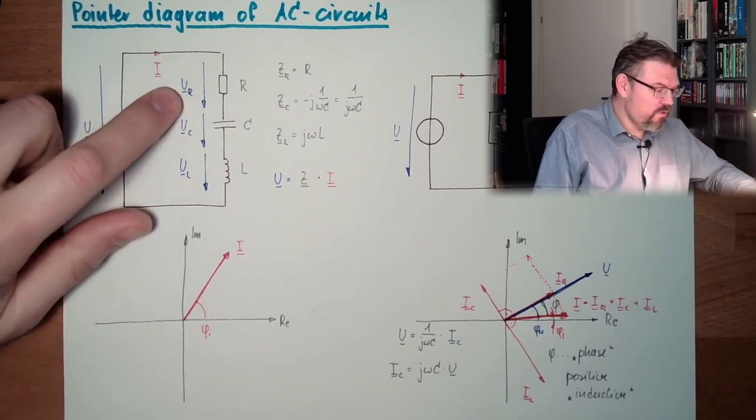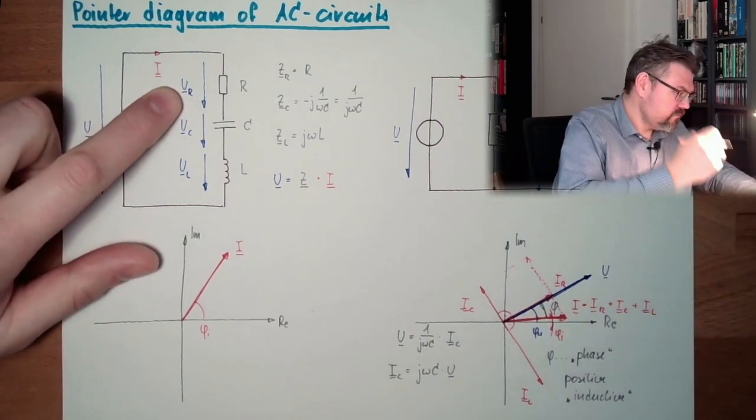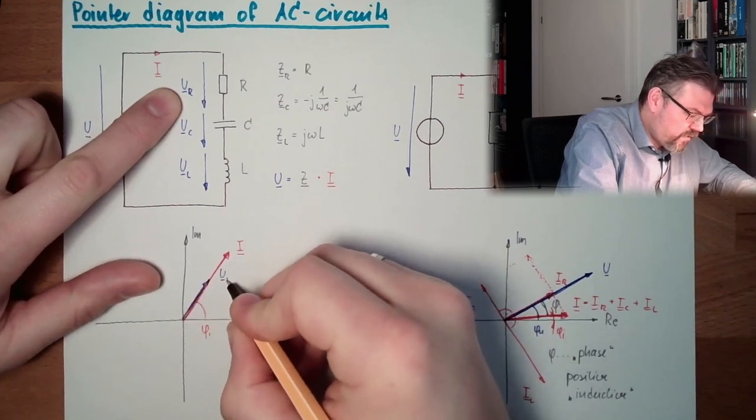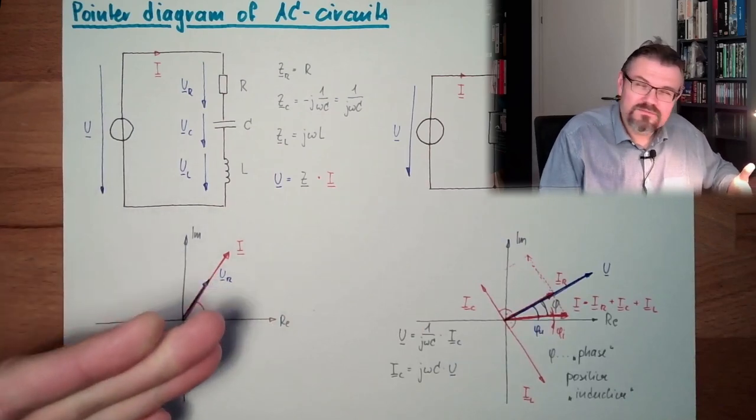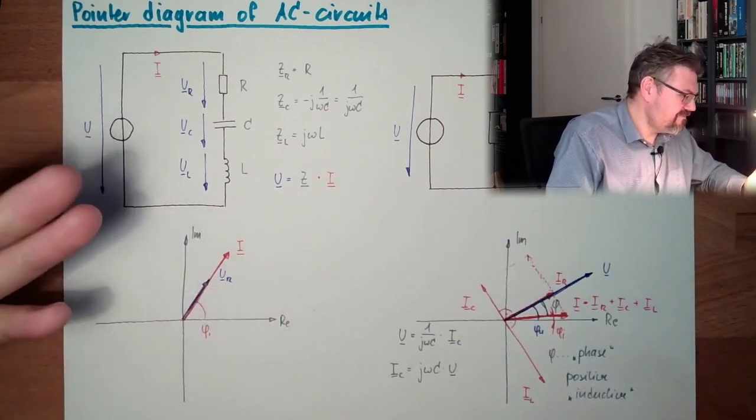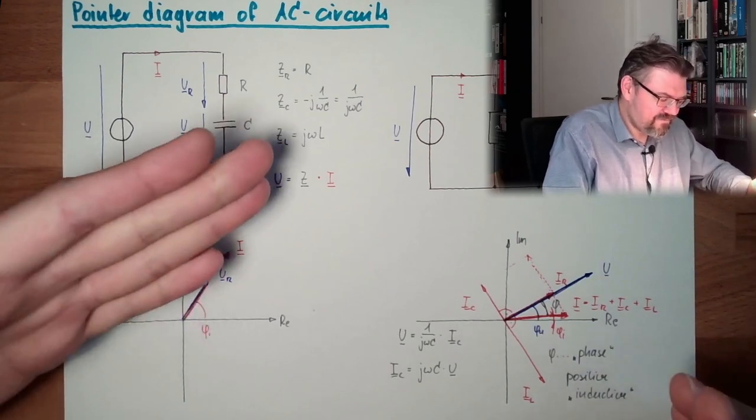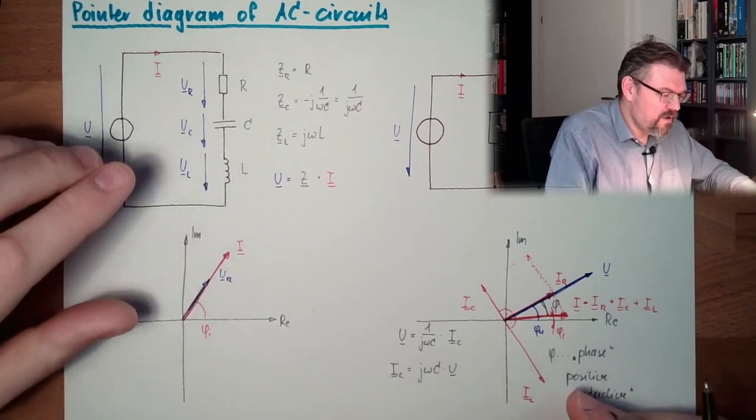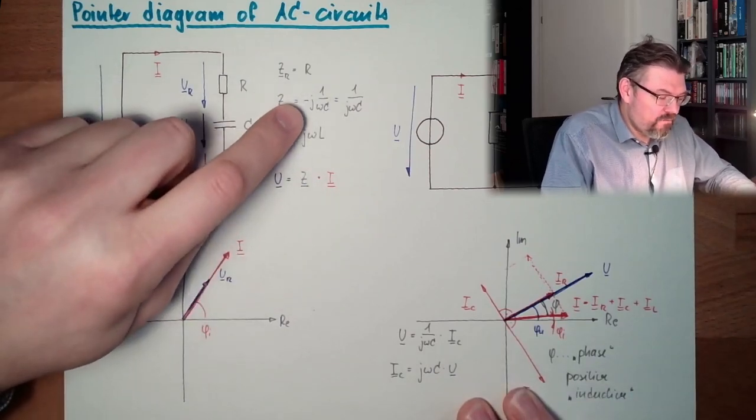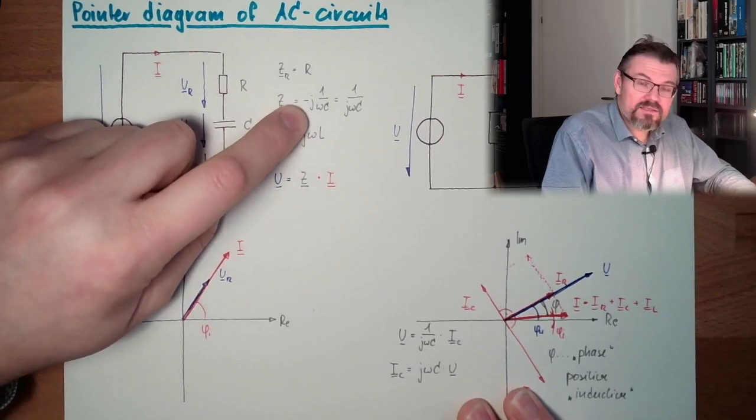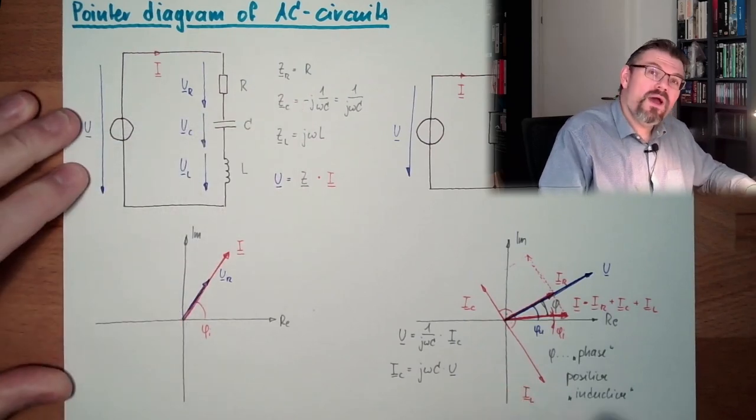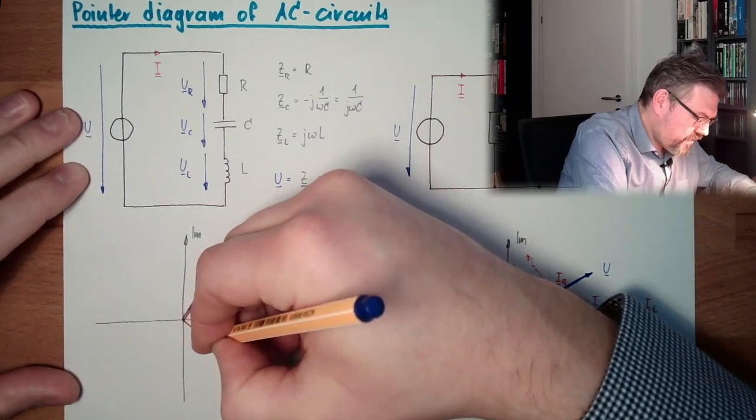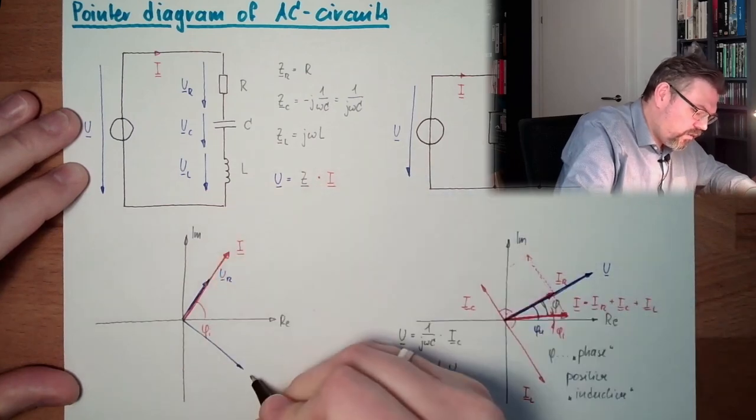I chose some starting point. UR goes in this direction, same direction, because R has no complex component, no angle, so same angle. C, minus 90 degrees, it's going down. So U at a capacitor is 90 degrees in this direction. Now I draw a long one, UC. Here we are 90 degrees.